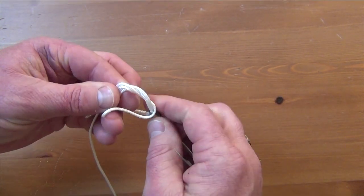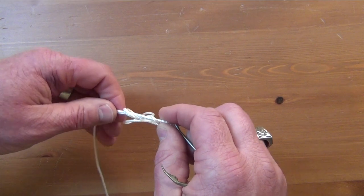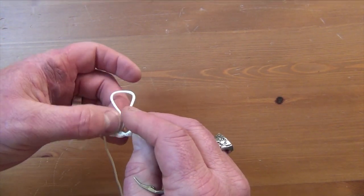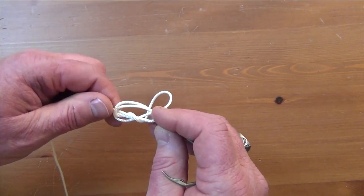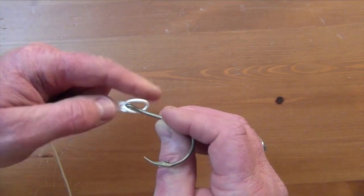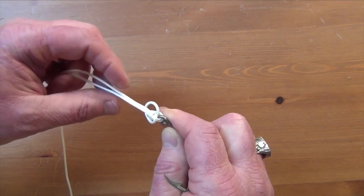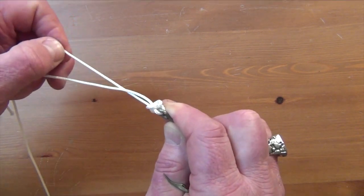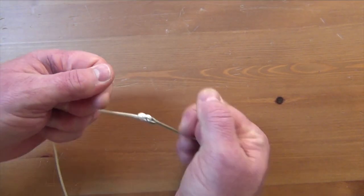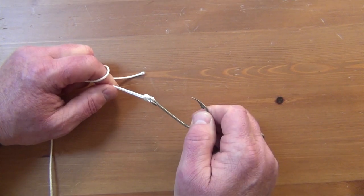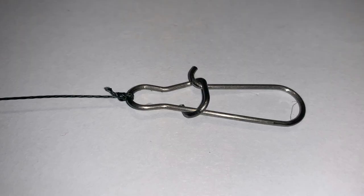And then we're going to start cinching down. Now a lot of times with real braid you may need to wet this with some saliva, but you want to get that nice and snug right there. Now we have a good Palomar knot. That's not coming off if you're using that on braid.